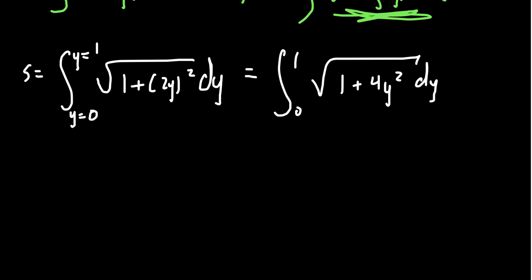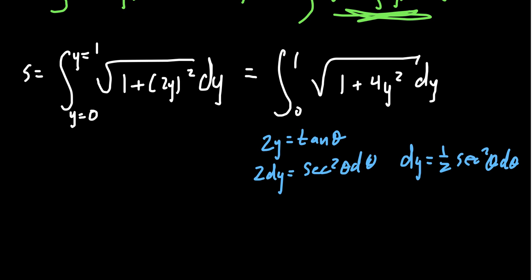And we've seen integrals like this before. This is actually one where a trigonometric substitution might be quite appropriate here. We could set, because notice we have a sum of squares inside of a square root. We could set 2y equal to tangent theta. This would then tell us that 2dy would equal secant squared theta d theta. So solving for dy, we get dy equals just 1 half secant squared theta d theta. And we also know that the square root of 1 plus 4y squared is going to equal a secant theta.